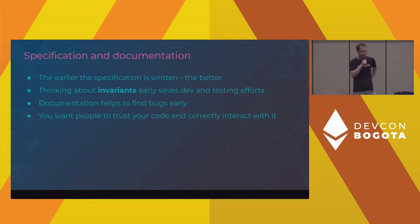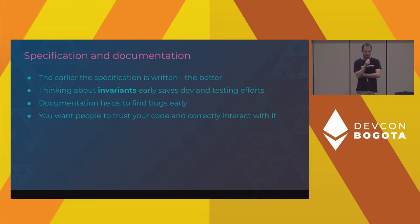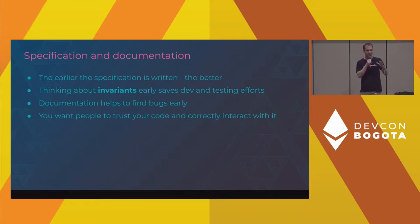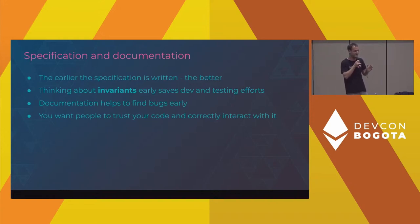That's the only slide covering specification and documentation. As I said, you should tackle this early on. Apart from the threat model, you should think about invariants — things that should always hold, things that should always hold when the system is in a given state, and new invariants when the system transitions to another state. This can help you find bugs early. Documentation is also critical for the users of your project, so they know what they're interacting with. Other DeFi protocols that integrate with your protocol rely on your documentation being extensive and accurate.